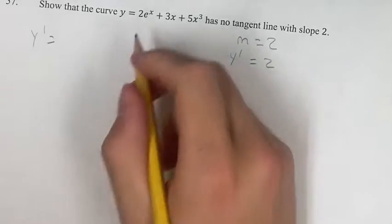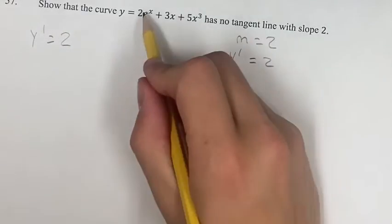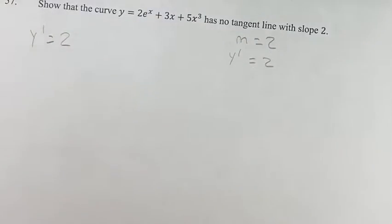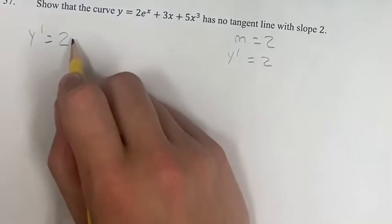So y prime, starting with this term, you bring the coefficient out in front, and I'm looking at e to the x. The derivative of e to the x is just itself, so this is 2e to the x.